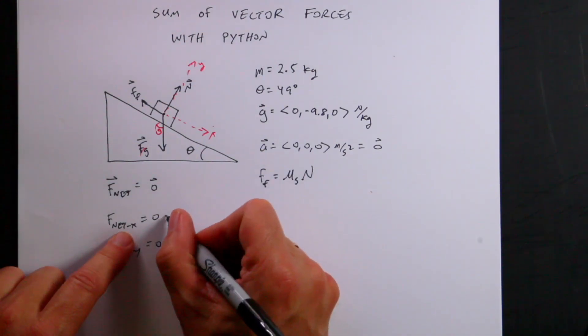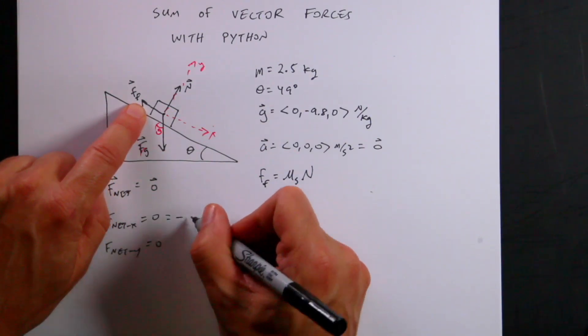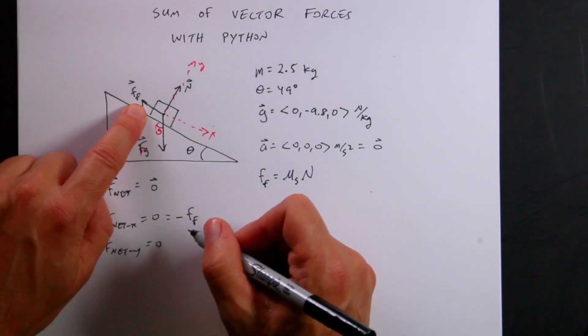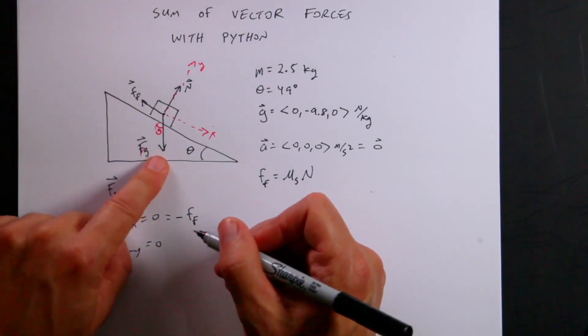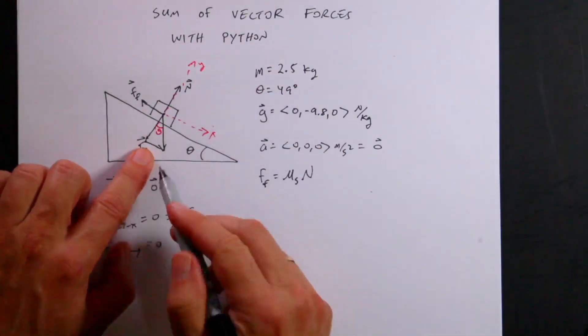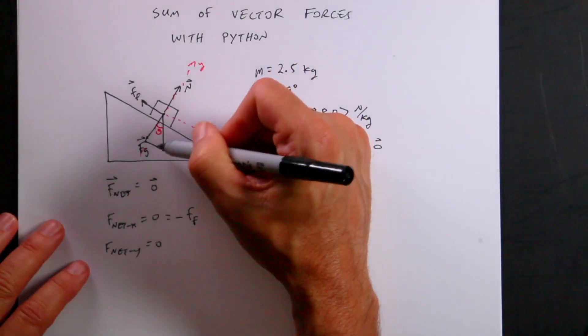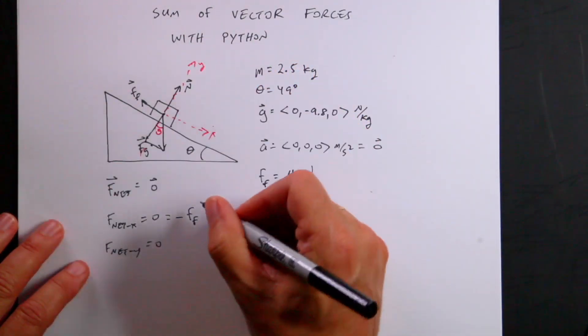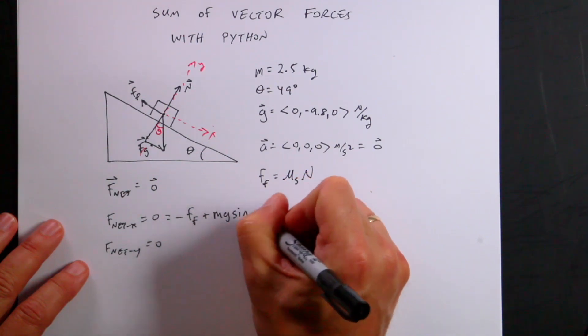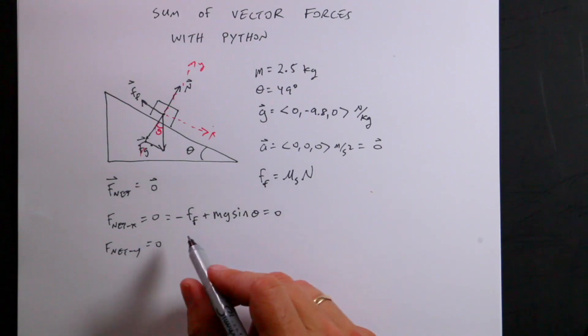So in the x direction, what force do I have? Well, I have the friction force in the negative x direction, Ff. It's in the negative x direction, all of it. And then I have a component of the gravitational force. So I'm dealing with this right here, which is the opposite side of that triangle. This side is mg. So that's going to be mg sine theta. So I'm going to say plus mg sine theta equals 0. And that's true.